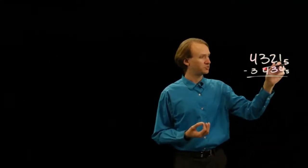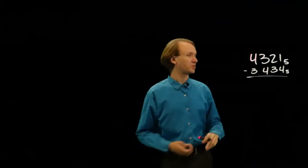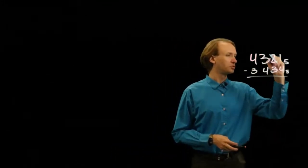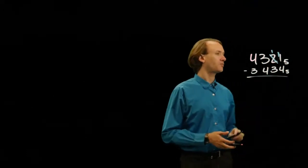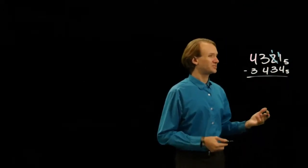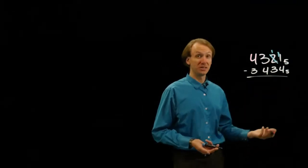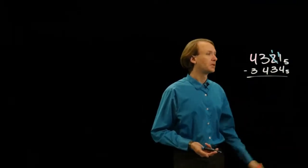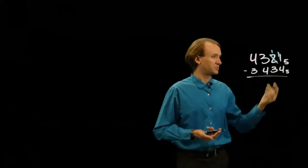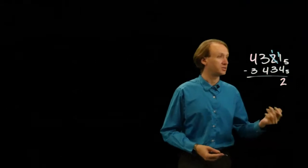I can't subtract 4 from 1, so I'll need to borrow something from that 2. 2 minus 1 is 1. Now I have 11. But I'm in base 5, so this is really the same as 6 in decimal. 6 minus 4 would obviously be 2. Or I can say 4 plus 1 would get me to 10, plus 1 more gets me to 11. Either way, I'll write down a 2.